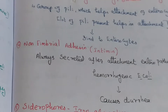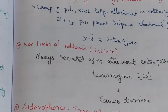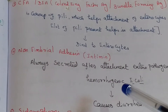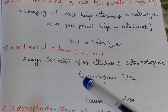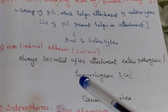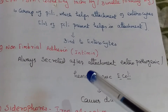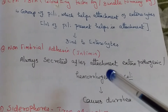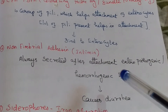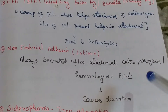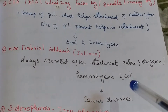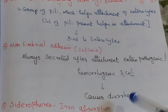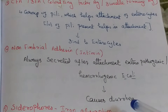The fourth virulence factor is non-pimbrial adhesin. It secretes intimin, which is secreted after attachment of enteropathogenic or enterohemorrhagic E. coli. This causes diarrhea.